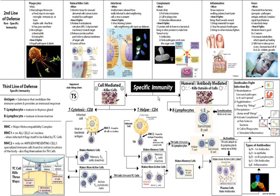Activated TC cells will do two things: they will make more memory cells, which will lay in wait for the next time this pathogen comes along, and they will also make more active cells. Those active cells will go out and search for more cells infected with that specific type of pathogen.